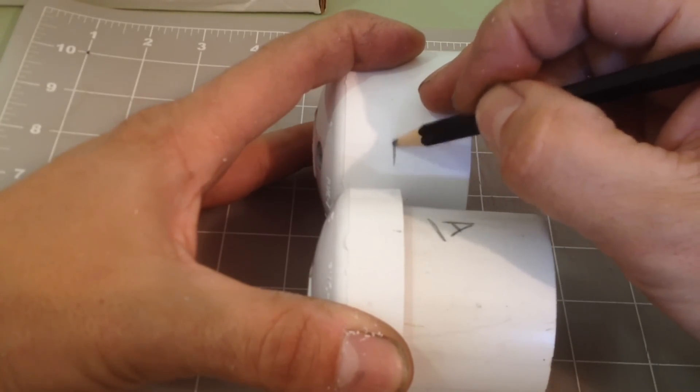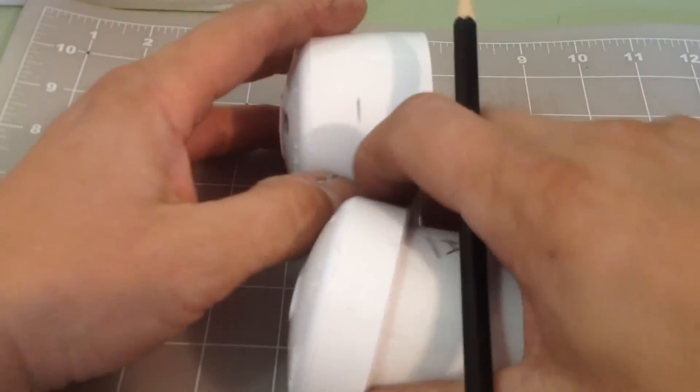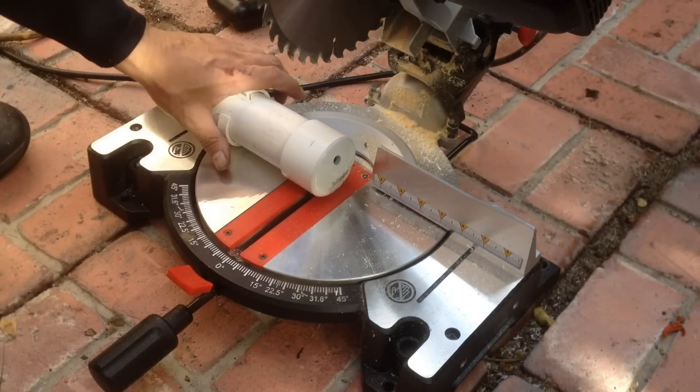With the barb fitting removed I mark the other 2 inch PVC cap and cut it in the same way as the first.